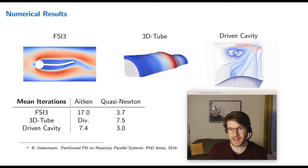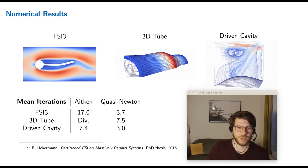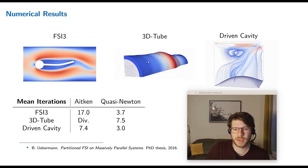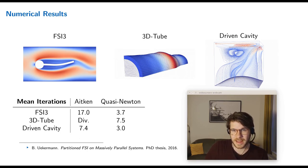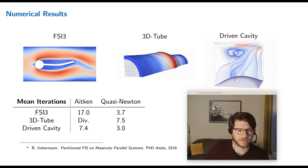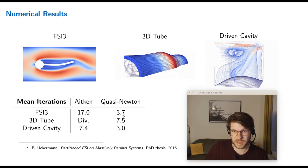How do Aitken under-relaxation and quasi-Newton acceleration compare? We looked at three test cases: the well-known Turek-Hron FSI3 benchmark, a pressure wave in a flexible tube, and a driven cavity with a flexible bottom. The most interesting number is the average iterations needed to converge within one time window — smaller is better. For these three scenarios, quasi-Newton consistently outperforms Aitken.